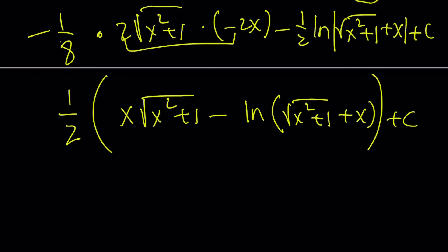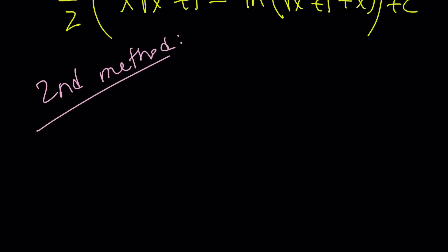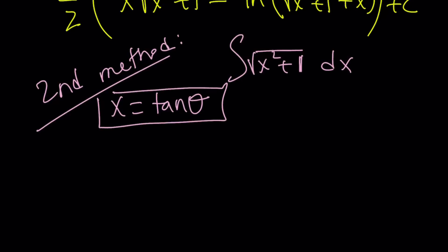That brings us to the end of the first method and the beginning of the second method. Bear with me for another couple of minutes and then we'll be done — at the end I'm going to show you a really cool graph. The second method uses the trigonometric substitution x = tan θ. Whenever you see √(x² + 1) or x² + 1, x = tan θ is the appropriate substitution.